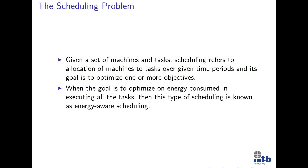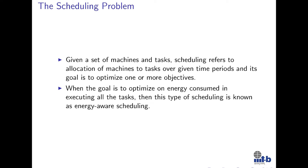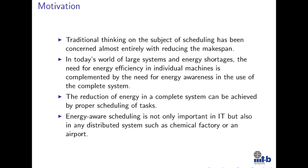We have given a new formulation and shown that the energy-aware scheduling problem is the generalization of the minimum makespan scheduling problem. When we have a set of machines and a set of tasks, scheduling refers to allocation of machines to tasks over given time periods, and its goal is to optimize one or more objectives. When the goal is to optimize the energy consumed in executing all the tasks, this type of scheduling is known as energy-aware scheduling. One of the biggest problems researchers have been working on aims to minimize the time elapsed in completing a set of tasks, which is known as makespan scheduling. With the ever-increasing energy demand and limited energy resources, there is an urgent need to work on the lesser-developed area of energy-aware scheduling.